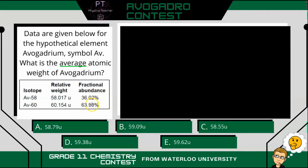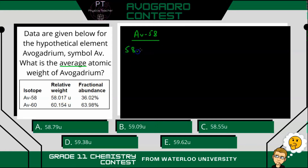What we're going to have to do is find the contribution of Av58 and the contribution of Av60. To find the contribution of Av58, we take its relative weight — 58.017 atomic units — and multiply that by its percentage, which is 36.02%, or written as a decimal, 0.3602. When we do that, we get 20.90.